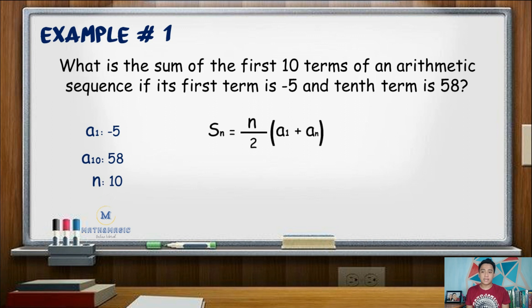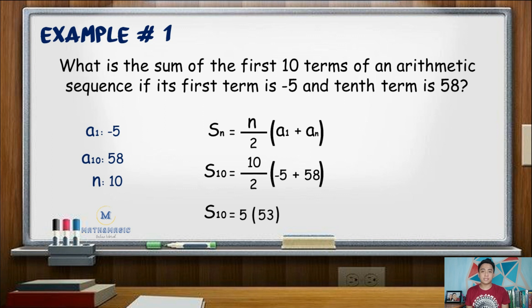Following the formula, we have S sub 10 is equal to 10 over 2 times the quantity negative 5 plus 58. Performing the operation: 10 divided by 2 is 5, and negative 5 plus 58 is positive 53. Multiplying 5 and 53 gives us a product of 265. Hence, the sum of the first 10 terms of the given arithmetic sequence is 265.